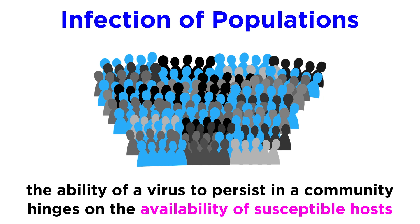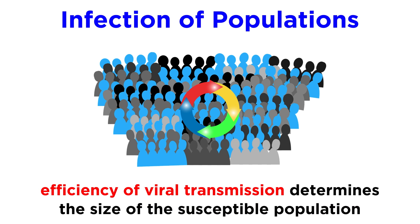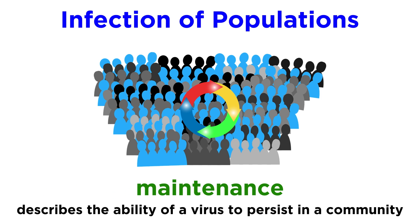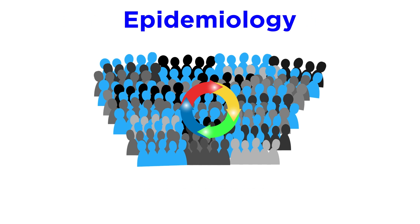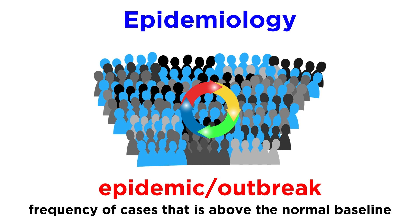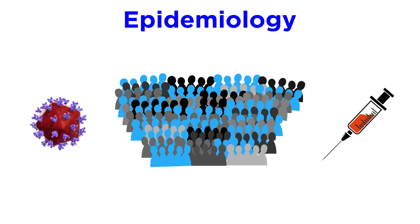Thinking at the population level, the ability of a virus to persist in a community hinges on the availability of susceptible hosts, and the efficiency of viral transmission determines the size of the susceptible population. We use the term maintenance to describe the ability of a virus to keep going in a community. Recall that the term epidemic, or outbreak, refers to a frequency of cases that is above the normal baseline, or more cases than were expected. We'll circle back to things like epidemiology and vaccines once we've explored some of the most clinically relevant viruses one at a time, so let's move forward and get started with a survey of viruses.